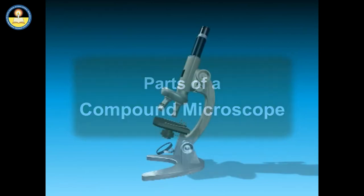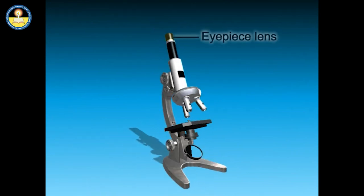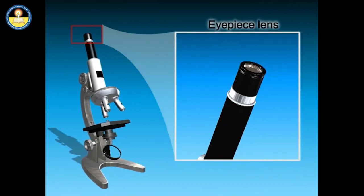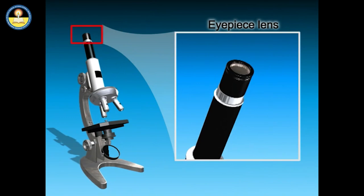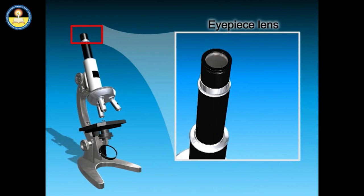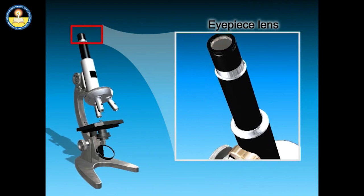The compound microscope has two systems of lenses for greater magnification: an eyepiece lens and an objective lens. The lens closer to the object to be viewed is referred to as the objective, while the lens closer to the eye is called the eyepiece. The eyepiece lens is usually of 10x or 15x magnifying power. A power of 10x implies magnification of 10 times the size of the object under observation.